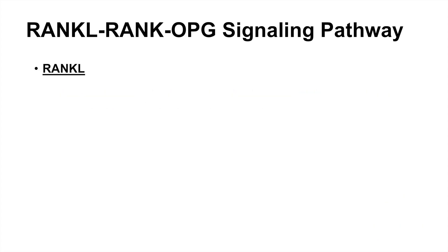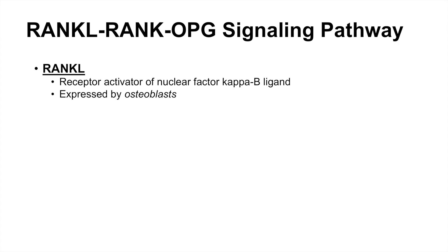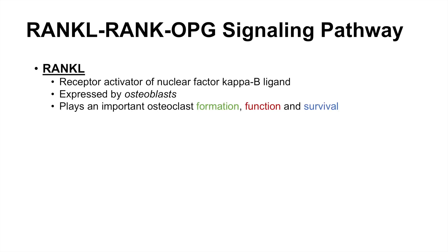RANKL, or R-A-N-K-L, stands for Receptor Activator of Nuclear Factor Kappa B Ligand. It is a protein that is expressed by osteoblasts, which are bone cells involved in the formation of bone. RANKL plays an important role in osteoclast formation, function, and survival. Osteoclasts are bone cells that reabsorb bone.